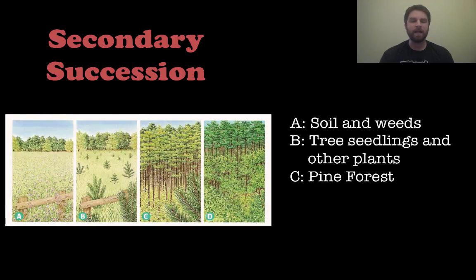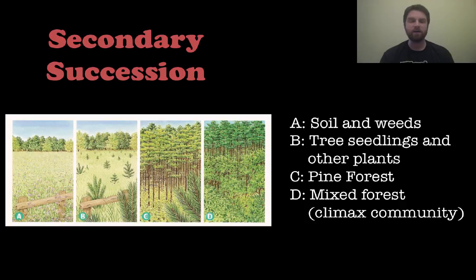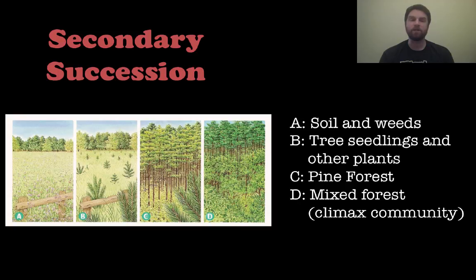Looking at pictures A through D for secondary succession: picture A shows some soil and some weeds. Pretty soon you have tree seedlings and other plants. That graduates into a pine forest, and then you have a mixed forest, which is the climax community for secondary succession.